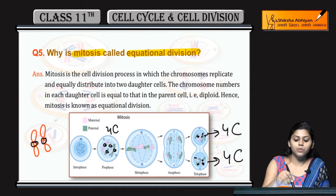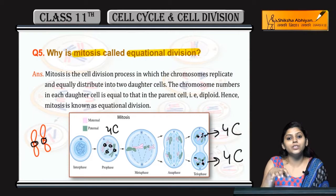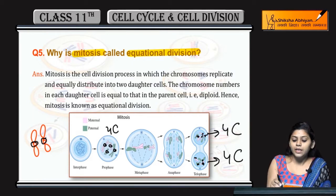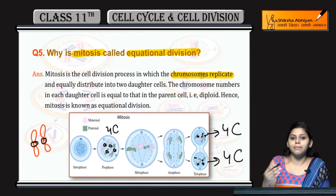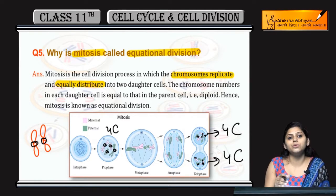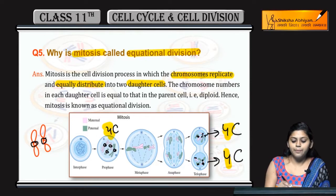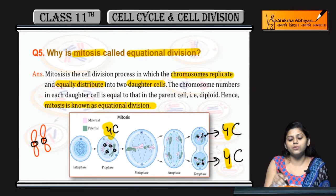In mitosis, the daughter cells have an equal number of chromosomes. Chromosomes replicate and are equally distributed into the daughter cells, so the chromosome number in each daughter cell is equal to that in the parent cell. This is why mitosis is known as equational division.